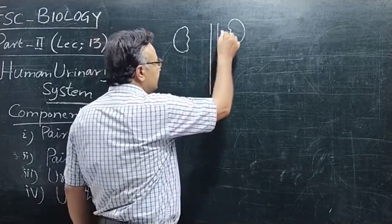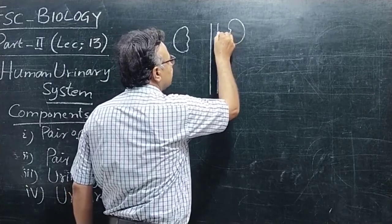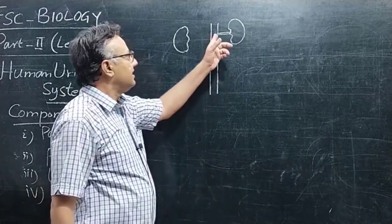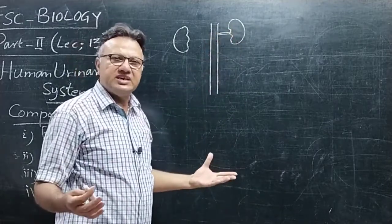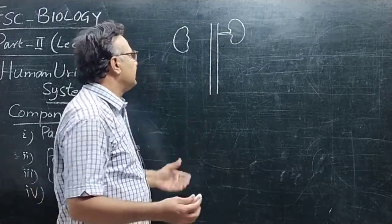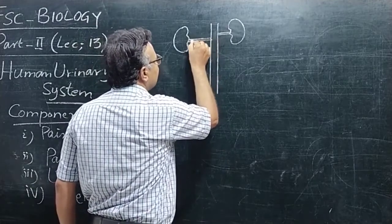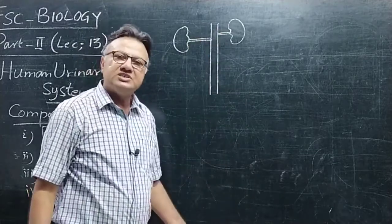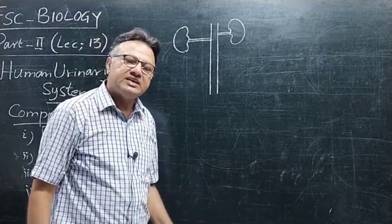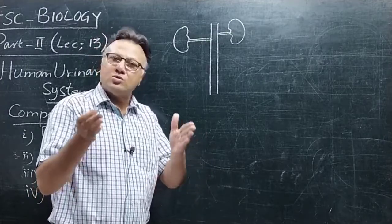اس main artery سے یہاں پہ supply ہوتا ہے — renal artery کے ذریعے۔ ظاہر ہے kidney کو oxygenated blood چاہیے، تو یہ oxygenated blood renal artery کے ذریعے ملے گا۔ اس کے ساتھ ساتھ جو kidneys ہیں، renal veins ان میں سے deoxygenated blood کو collect کرتی ہیں۔